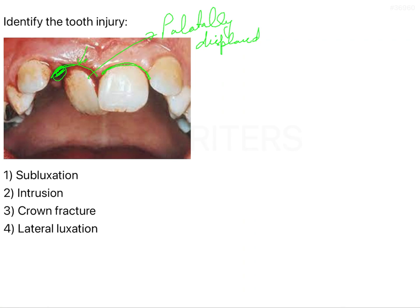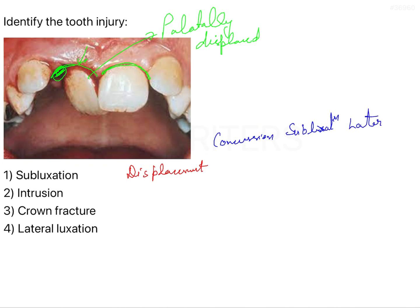We only have this information to go on. The feature we have to study here is the displacement. There are actually five types of injuries we generally read: concussion, subluxation, lateral luxation, extrusion, and intrusion.